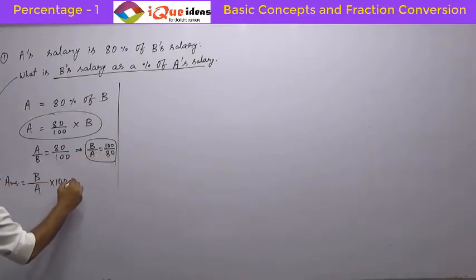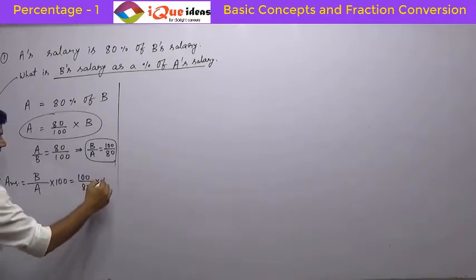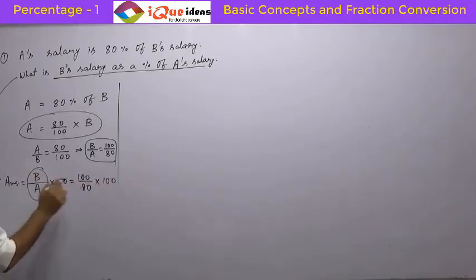We have already calculated B by A as 100 by 80 into 100. So B by A is 100 by 80. Simplify this.